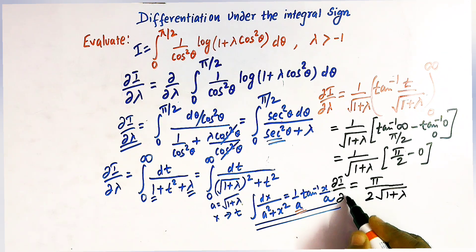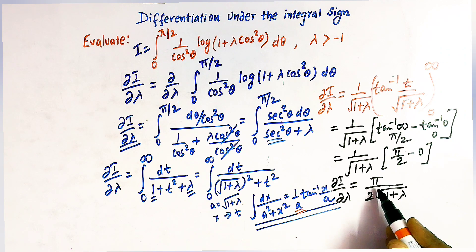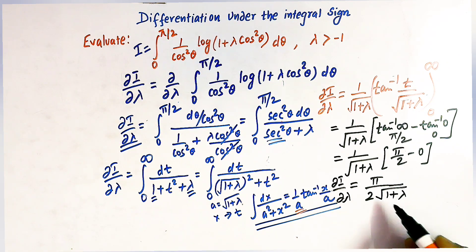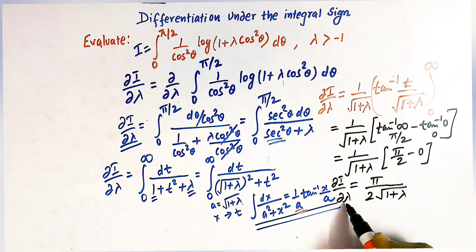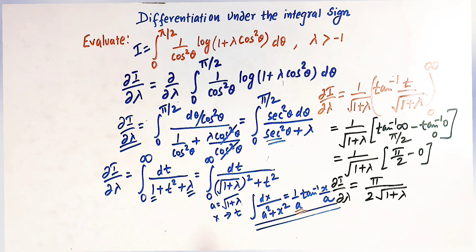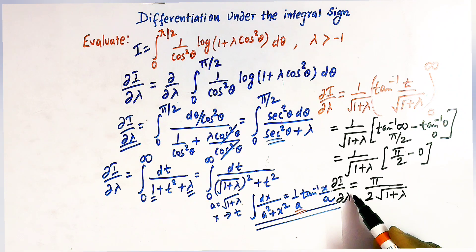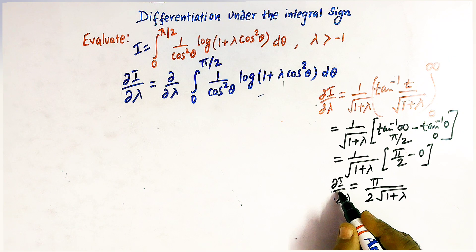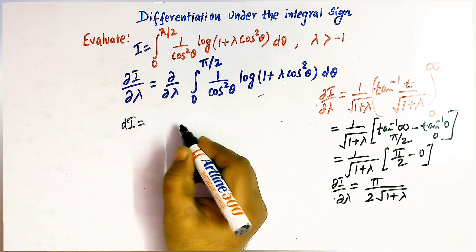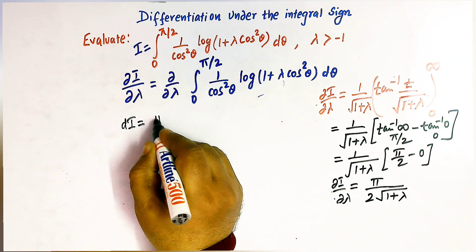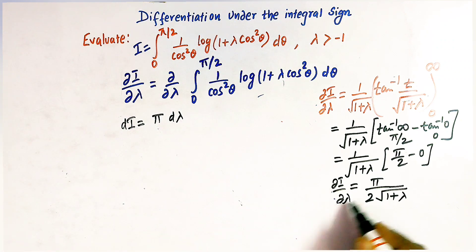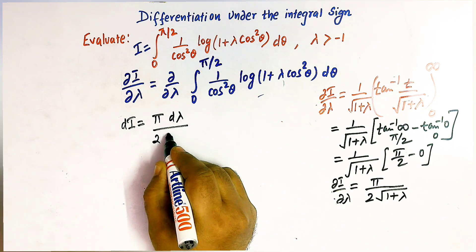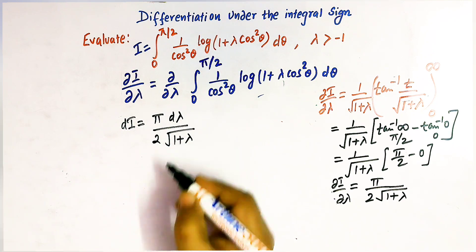This is a differential equation in λ in variable-separable form. We can separate the variables and integrate both sides: di = π·dλ/(2√(1+λ)).